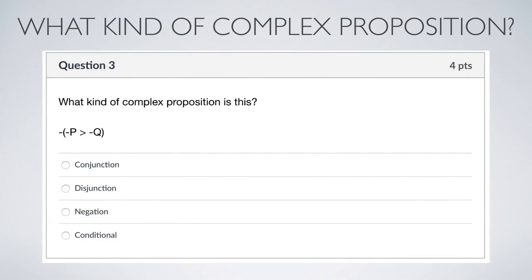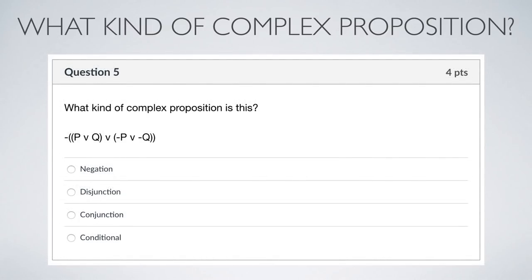Looking at the next one, we have a conditional and negations. Look for what's outside the parentheses: inside we have a conditional of negations, but outside we just have a negation. This is an instance where the entire complex proposition is just negated — so this is a negation. The next one has lots of symbols: parentheses, disjunction, negations. But again, look for what's outside the parentheses — and what's outside is also a negation. So this is a negation. Keep that in mind when talking about the truth conditions for complex propositions.